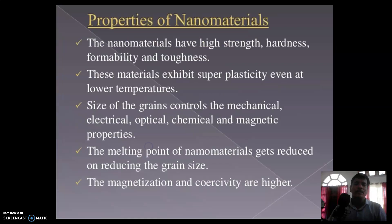These are the properties of nanomaterials. Nanomaterials have high strength, hardness, formability, and toughness. These materials exhibit superplasticity even at lower temperatures. The size of the grains controls the mechanical, electrical, optical, chemical, and magnetic properties.